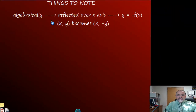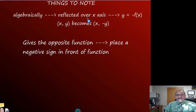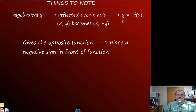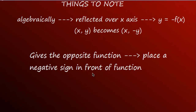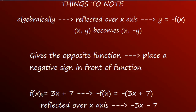Algebraically, when you reflect over the x-axis, the y values are all opposites, so we place a negative sign in front of the entire function. For example, if f(x) = 3x + 7 and we want to reflect it over the x-axis, we put a negative sign in front to move from above the x-axis where y is positive to below where y is negative. The reflected function becomes -3x - 7.